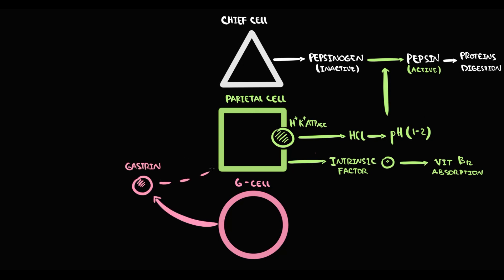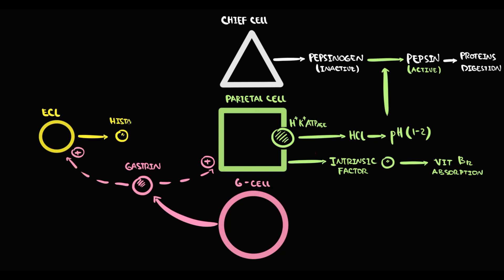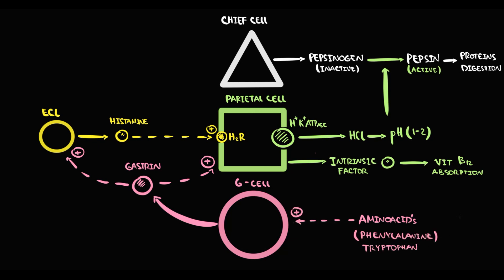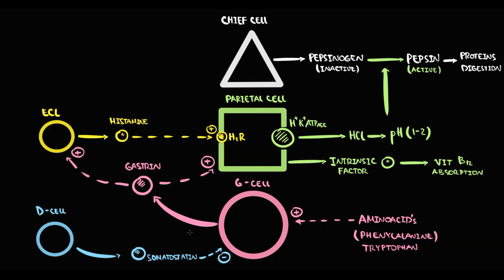G cells produce gastrin. Gastrin directly stimulates parietal cells, but also gastrin stimulates enterochromaffin-like cells. In response, enterochromaffin-like cells produce histamine, which acts on H2 receptors on parietal cells, thereby stimulating them. The major factor that stimulates G cells is amino acids — mostly phenylalanine and tryptophan. The stomach also has D cells, whose function is to produce somatostatin, which inhibits the function of G cells.